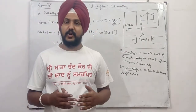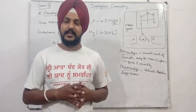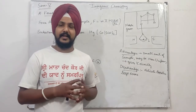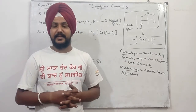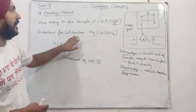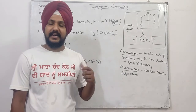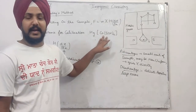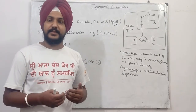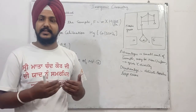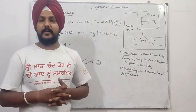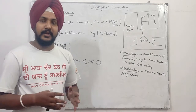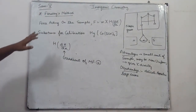क्योंकि inert atmosphere है तो Gouy's method जैसे further corrections नहीं करने पड़तीं और इसी formula को use कर सकते हैं। Faraday apparatus को calibrate करने के लिए same compound use करते हैं जो Gouy's method के लिए use किया था - mercury tetra thiocyanato cobaltate। यह substance Faraday apparatus को calibrate करने के लिए use होता है।